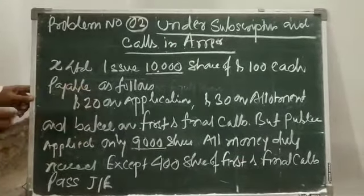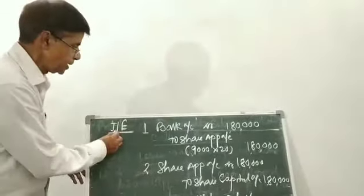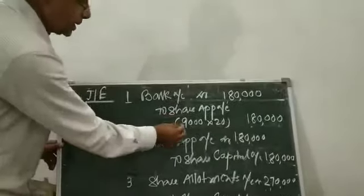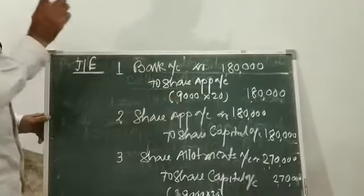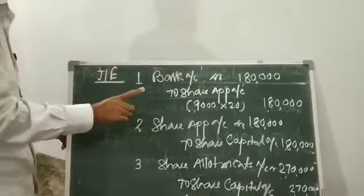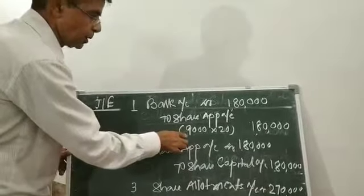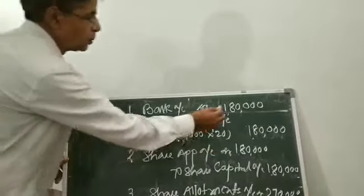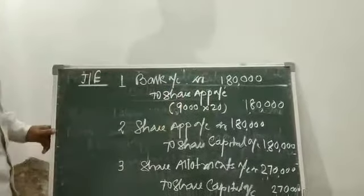Now we will solve this. First entry: Bank Account Dr. to Share Application Account. How much was applied? 9,000 shares at Rs. 20 each, so Rs. 1,80,000. Bank Account to Share Application Account — Rs. 1,80,000.